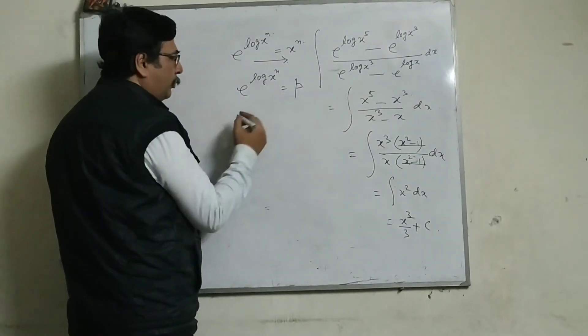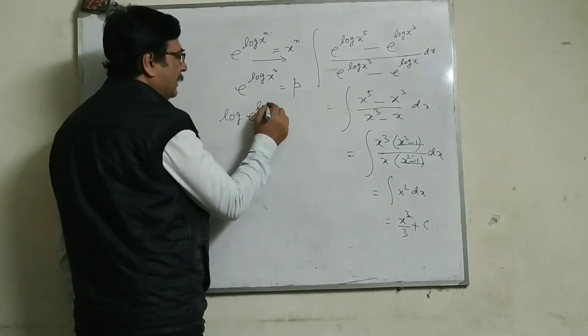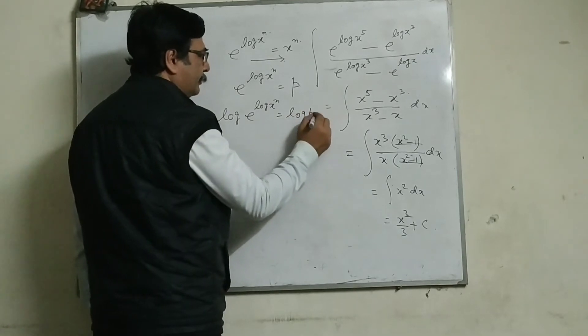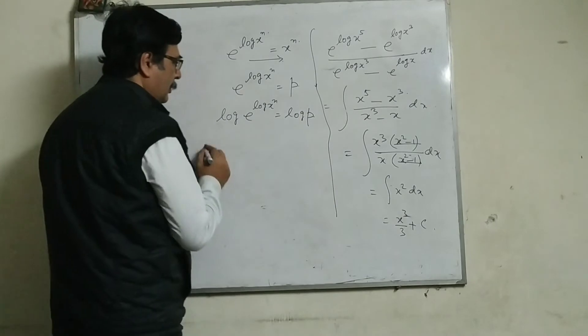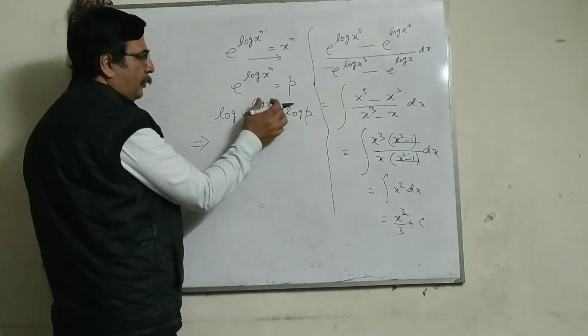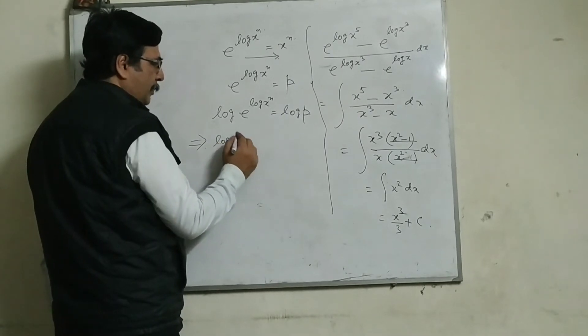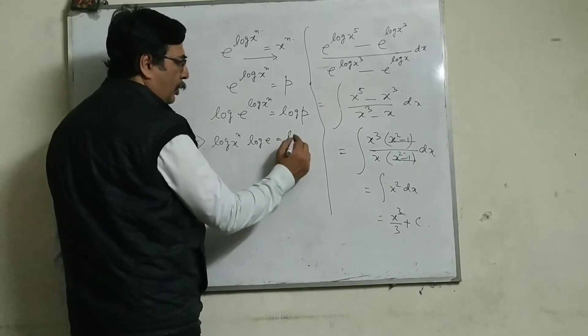Now, if I take log of both sides, then it will be log e to the power log x to the power n is equal to log p. Therefore, this one will come forward and it will be log x to the power n times log e is equal to log p.